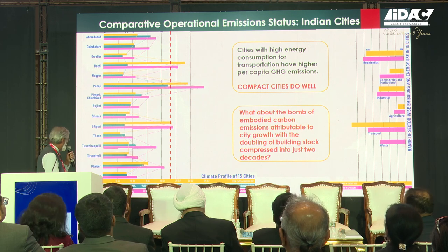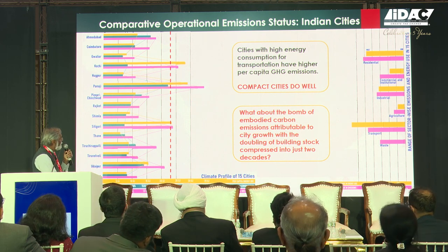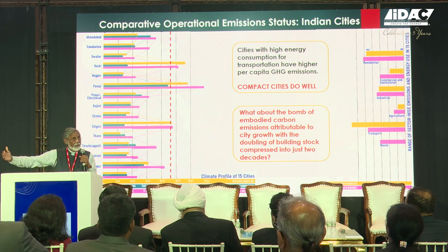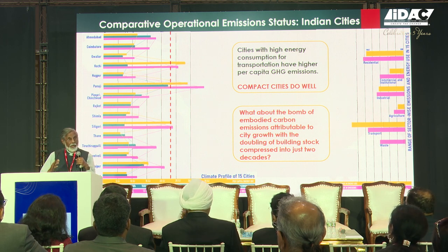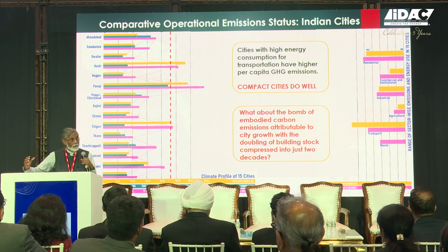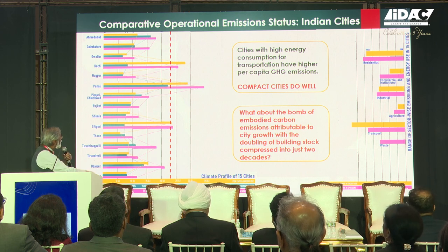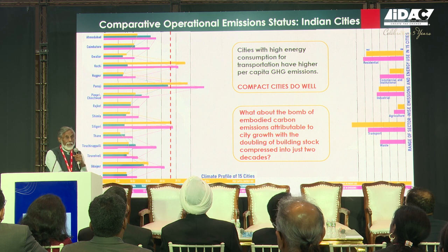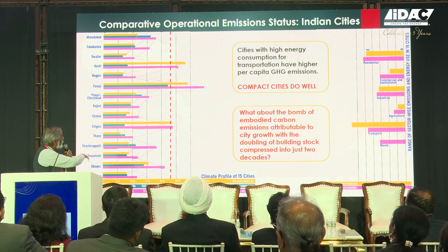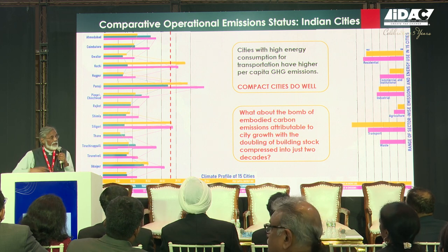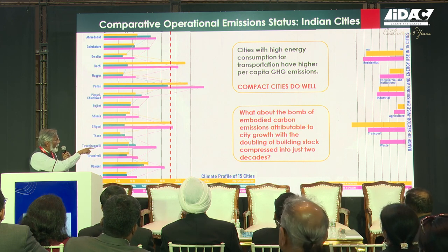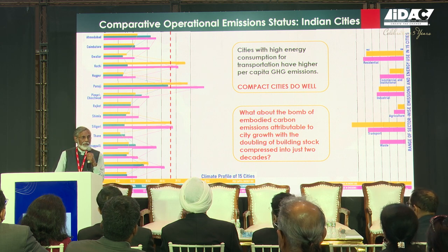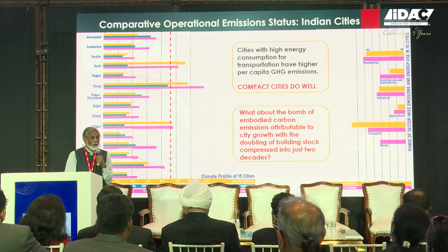Some very interesting research done recently by ICLEI measures per capita carbon emissions city-wise. Cities that are spread out have very high per capita carbon emissions; cities that are compact have relatively less — mostly because of transportation networks. Panaji is ridiculously high per capita; Siliguri is ridiculously high; but Baroda is much more compact. However, this picture only looks at today's operational energy — the running of the city. It does not look at the bomb of embodied carbon emissions attributable to city growth, with the doubling of building stock compressed into just two decades. That embodied carbon of construction has not yet been accounted for.